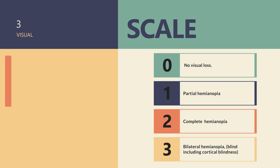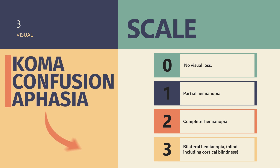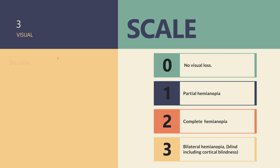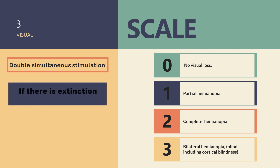Severely confused, comatose, and aphasic patients unable to do this item score a 3. Visual extinction testing with double simultaneous visual stimulation is usually performed at this point, although it is scored in test item 11. If there is visual extinction, a patient scores a 1 on this item.